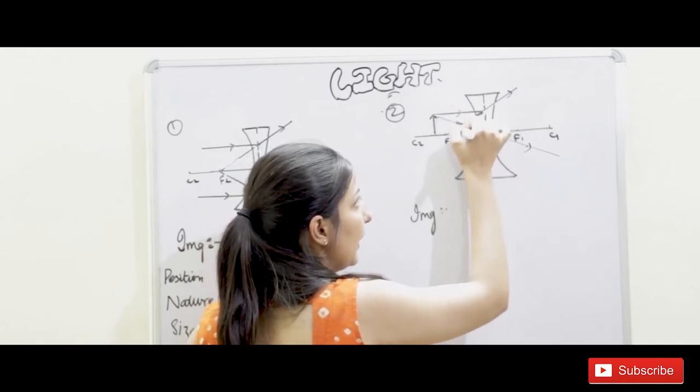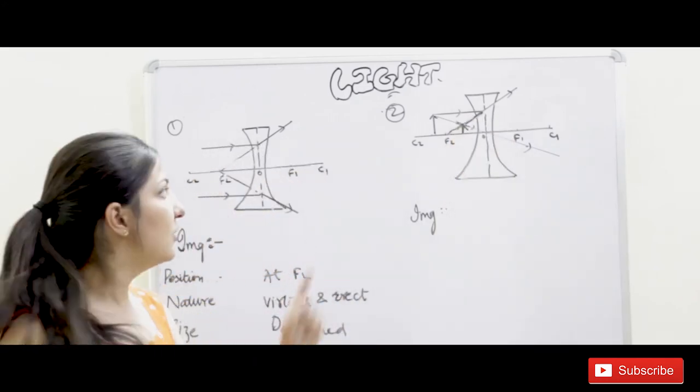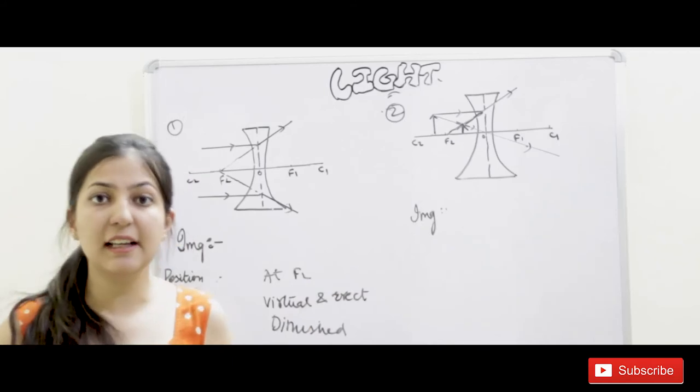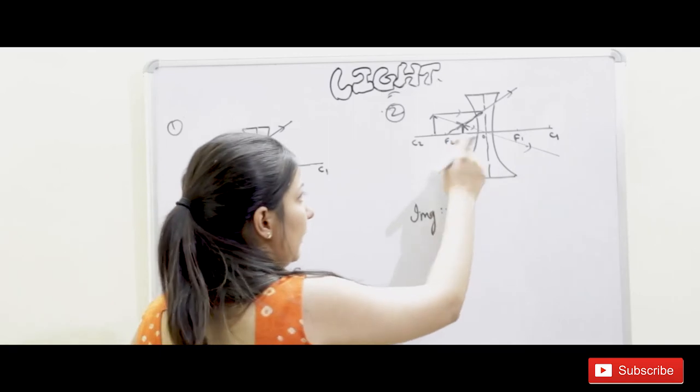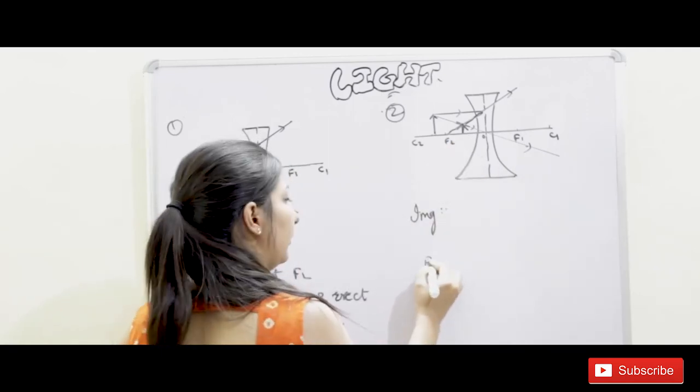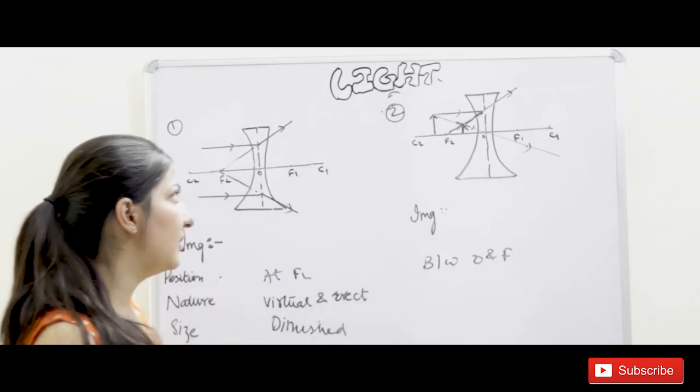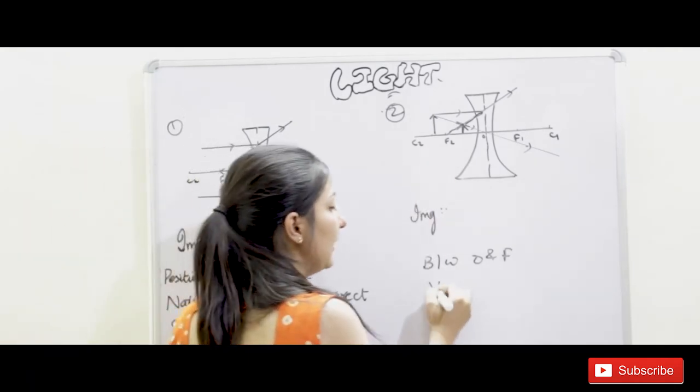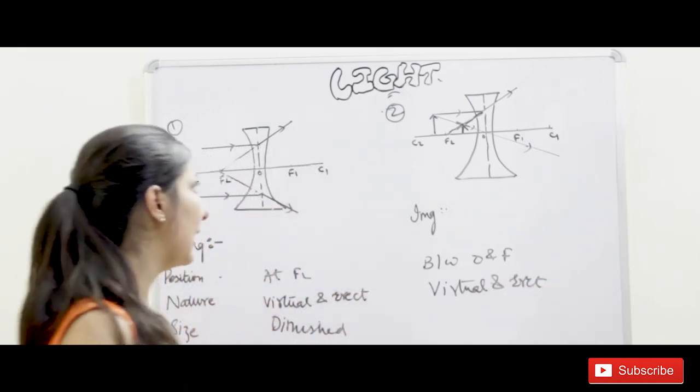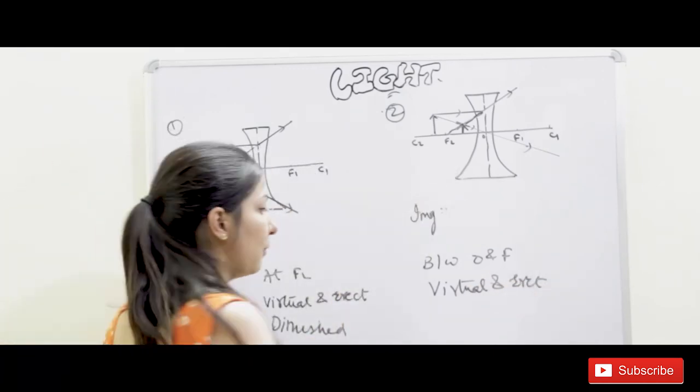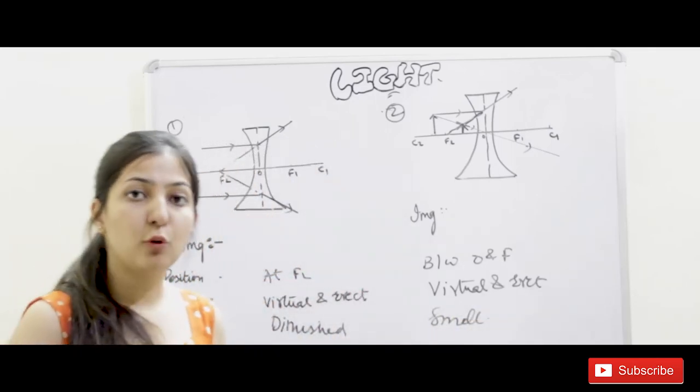So where you intersect, the image is the same. Where the second refracted ray intersects the image? First of all, where the image is the same: between O and F. Between O and F. After that, the nature is the same. First of all, the nature is the same: virtual and erect nature. After that, the size. How much size is the size? Small size. So always small is the size. If you configure any position, maybe an object size is below the size of the image size.